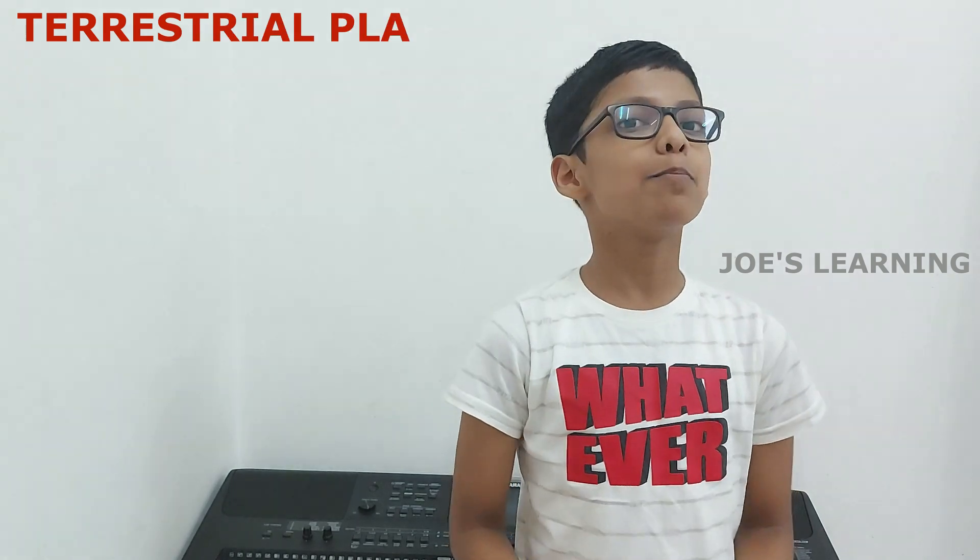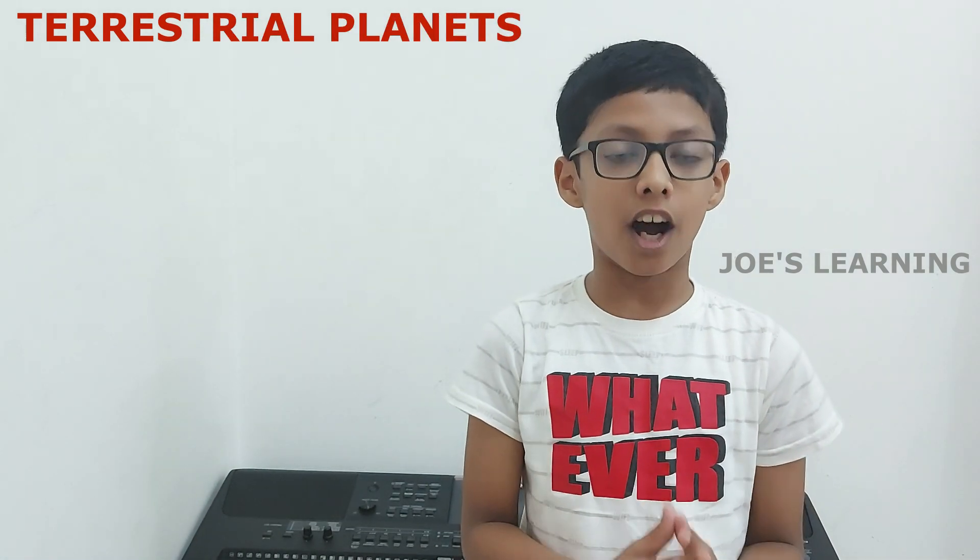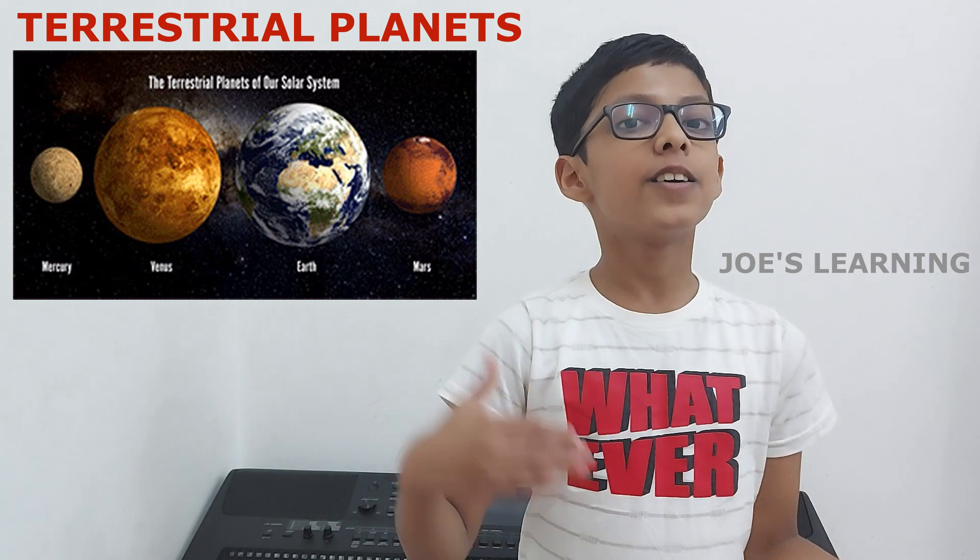So, these planets have been categorized into three groups. Now the first group is named as the terrestrial planets. The planets in this category are Mercury, Venus, Earth and Mars.